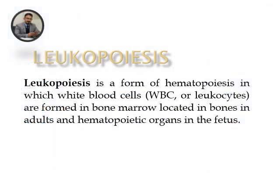The exact definition of leukopoiesis: leukopoiesis is a form of hematopoiesis in which white blood cells — that is, leukocytes — are formed in the bone marrow located in bones in adults, and in hematopoietic organs in the fetus. We can define leukopoiesis as the proliferation, maturation, and differentiation of all white blood cells through an organized process.